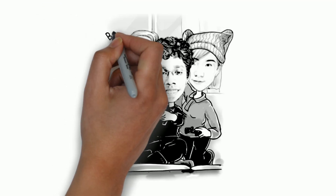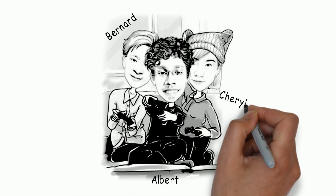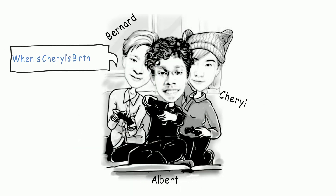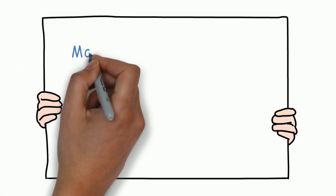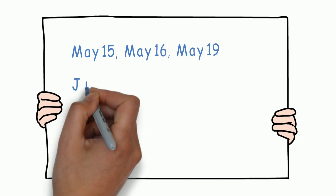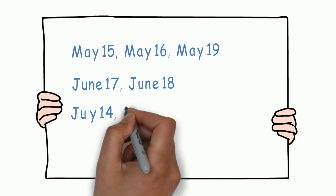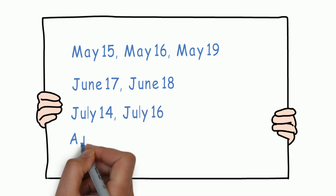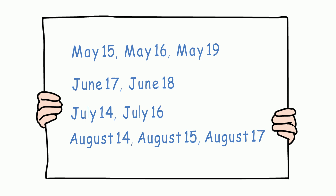Let's get down to it, shall we? Albert and Bernard just became friends with Cheryl and they want to know when her birthday is. Cheryl gives them a list of 10 possible dates: May 15th, 16th and 19th; June 17th and 18th; July 14th and 16th; August 14th, 15th and 17th.